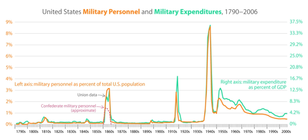The military history of the United States spans a period of over two centuries. During those years, the United States evolved from a new nation fighting Great Britain for independence, through the monumental American Civil War, and after collaborating in triumph during World War II, to the world's sole remaining superpower from the late 20th century to present. The Continental Congress in 1775 established the Continental Army, Continental Navy, and Continental Marines, and named General George Washington its commander.